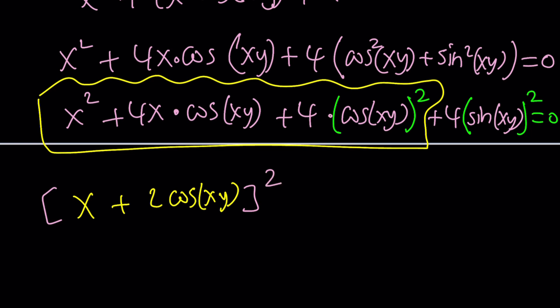Because when you square, you get that, okay? Plus, this is also a perfect square because 4 is a perfect square. And I can now write it as 2 times sine xy quantity squared equals zero.